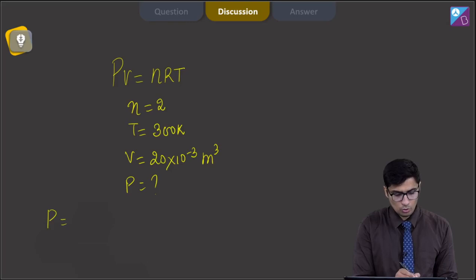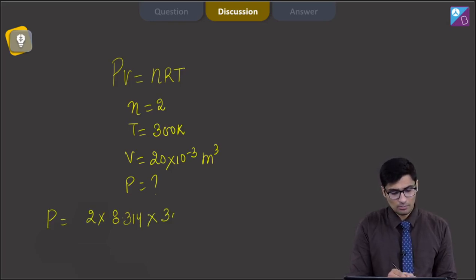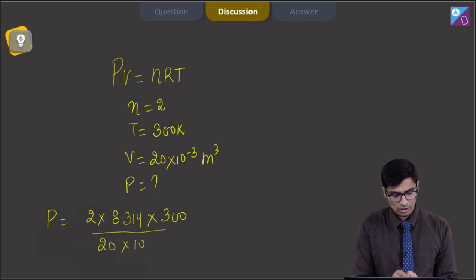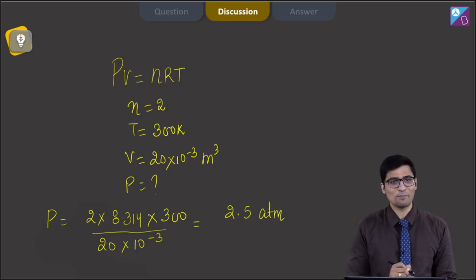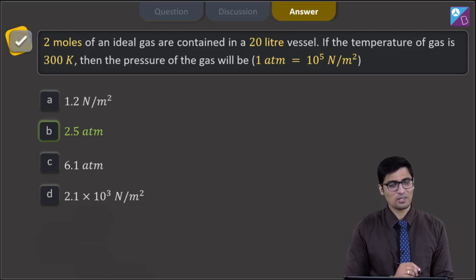Pressure will be equal to 2 into 8.314, which is the SI value of the universal gas constant, multiplied by 300, divided by the volume 20 into 10 to the power minus 3. This gives us a value of 2.5 atm, and hence the correct answer is option number B.